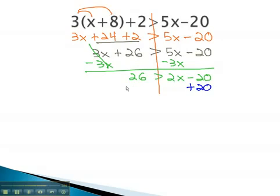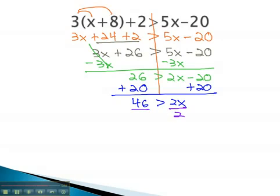By adding 20, we can begin isolating the variable on the right side. 46 is greater than 2x. Finally, dividing by 2 will tell us that x is less than the 23, or 23 is greater than the x.